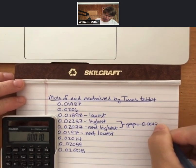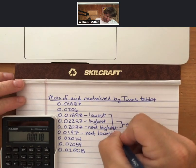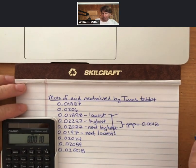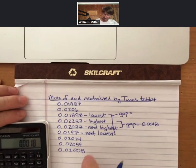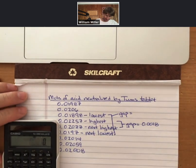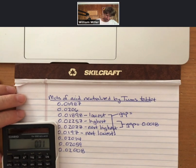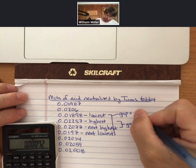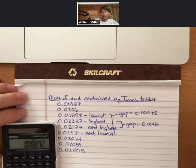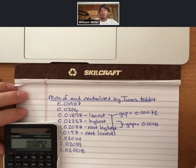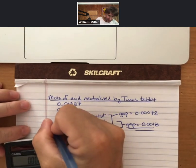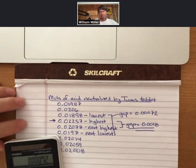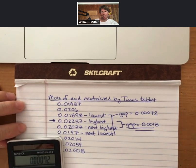And then my gap for my lowest is, I'll just do it so it's positive, 0.0197 minus 0.01898, which equals 0.00072. That means that I have a larger gap with my highest number, which means that 0.02257 is my potential outlier.